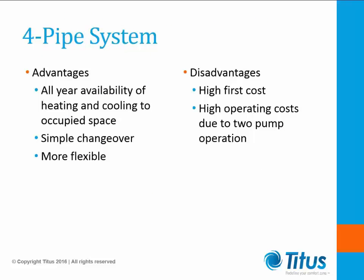Four-pipe system advantages: all-year availability of heating and cooling with individual zone temperature control. Chilled and hot water can be simultaneously supplied during the spring and fall seasons. Simpler changeover decisions — when to turn on the boiler, when to leave on the chilled water. More flexible and adaptable to widely varying loads. Disadvantages: four-pipe systems have a high first cost and require either two coils or more costly control valves at each terminal unit. They also have a higher operating cost due to two-pump operation, but do provide good flexibility in meeting varying loads.